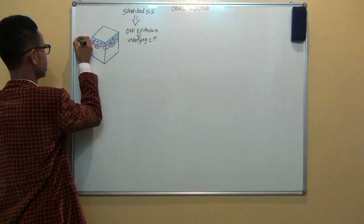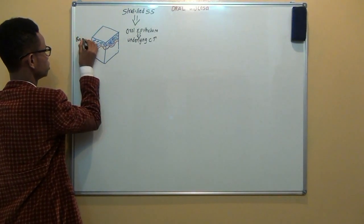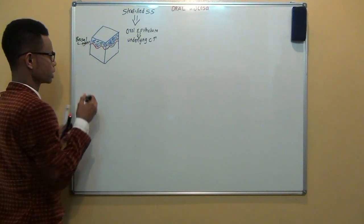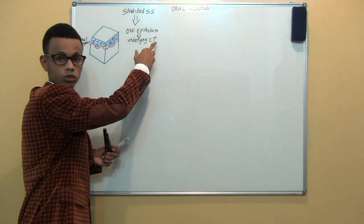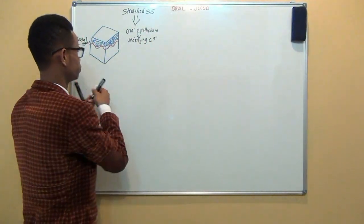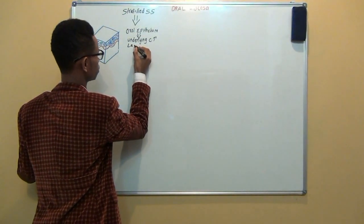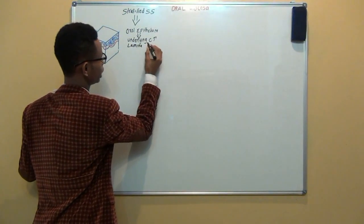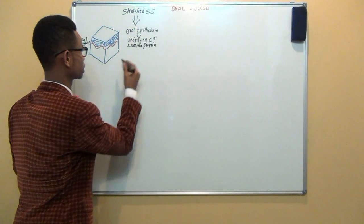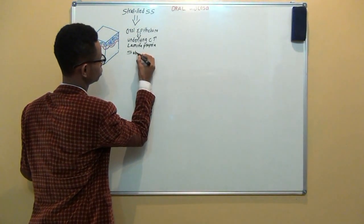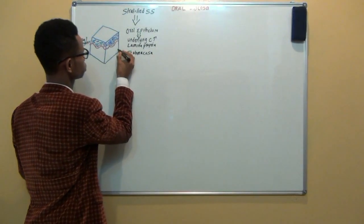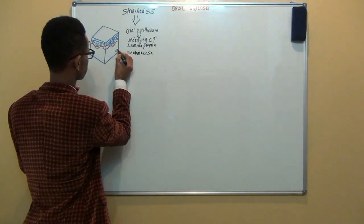We are going to see the basal layer. This is the connective tissue. Connective tissue can be divided into two parts: the lamina propria and the submucosa. This is the submucosa.